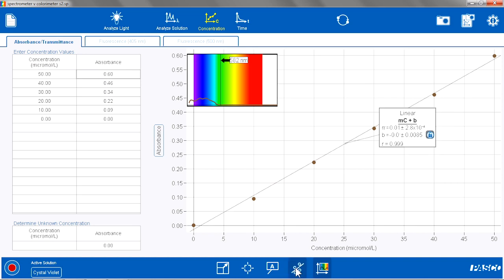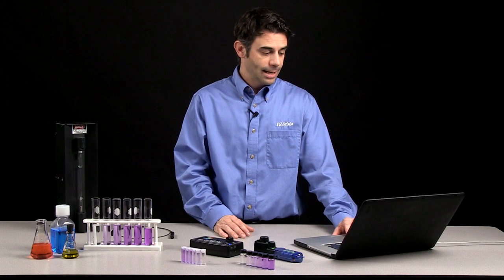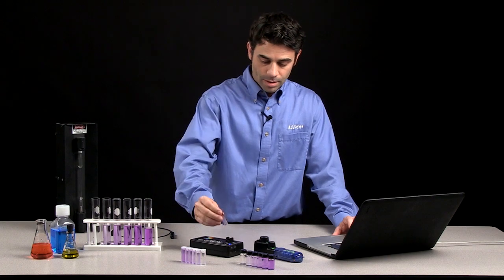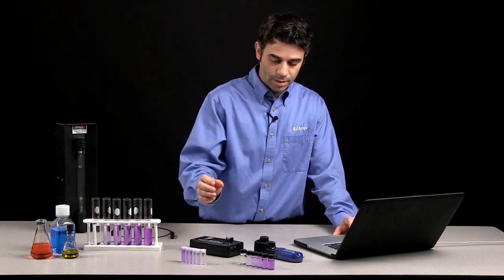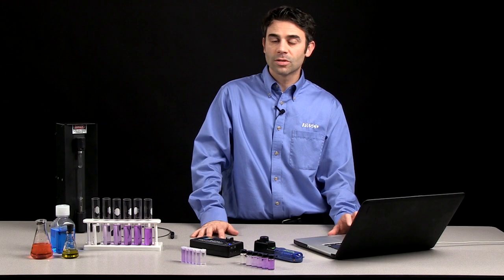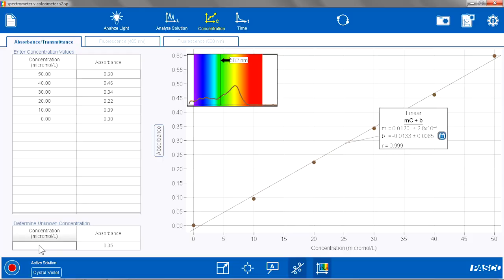And the other nice thing about the spectrometry software is I can take an unknown sample, and that unknown analysis is built right into this page. So I can insert my unknown, start my data collection, and save my data. And then the students can, based on the graph or their fit line or the slope and intercept, they can determine what the concentration should be.